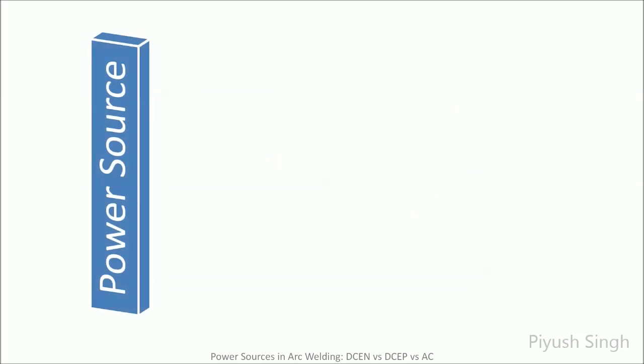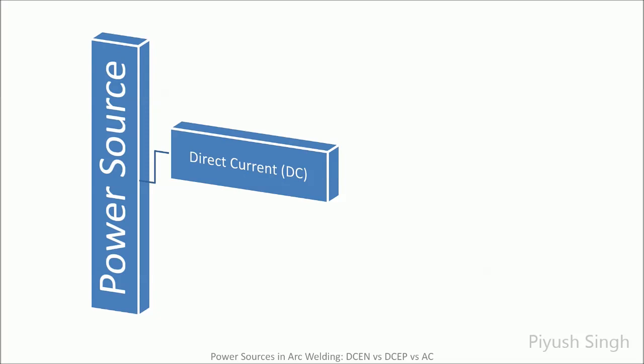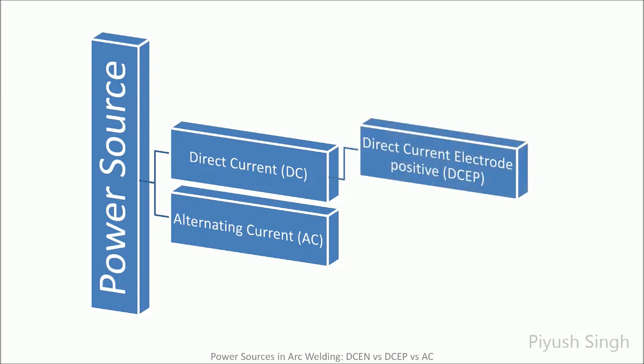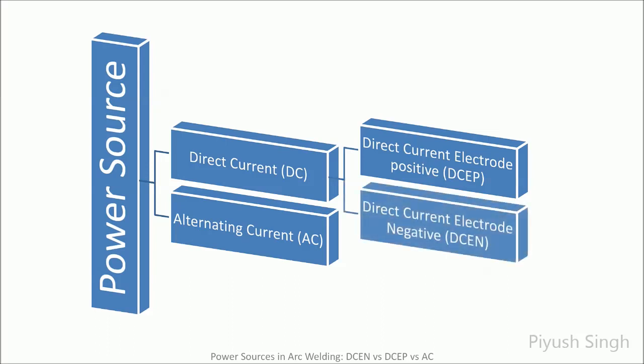The power source in electrical arc welding can be either direct current DC or alternating current AC. The DC power sources can again be of two types depending upon the polarity, namely direct current electrode positive DCEP and direct current electrode negative DCEN. I will discuss these a little later, but first let us compare DC and AC power sources.